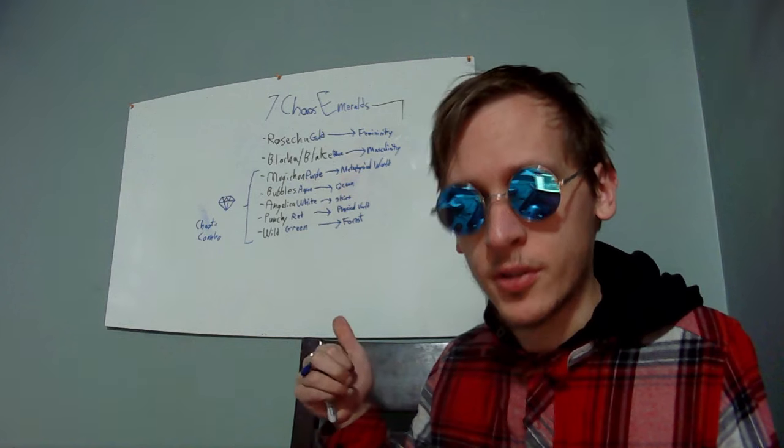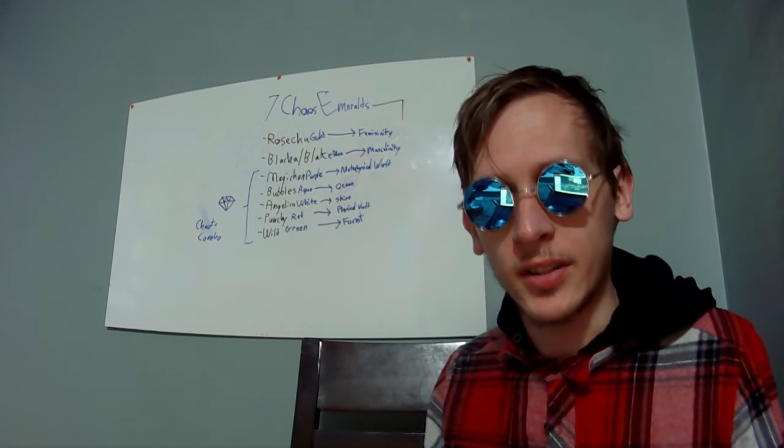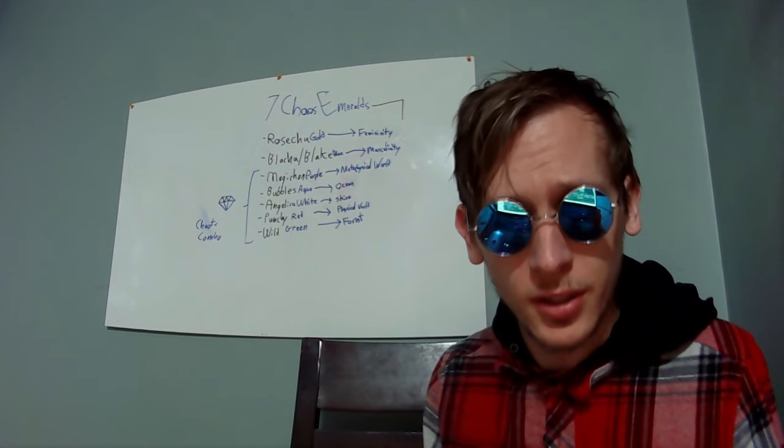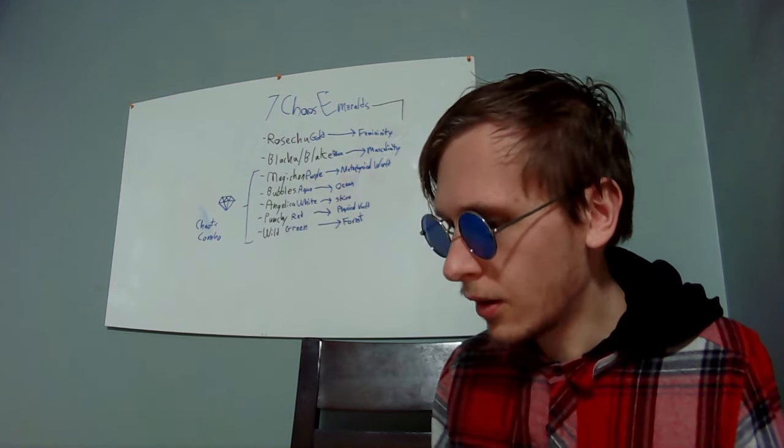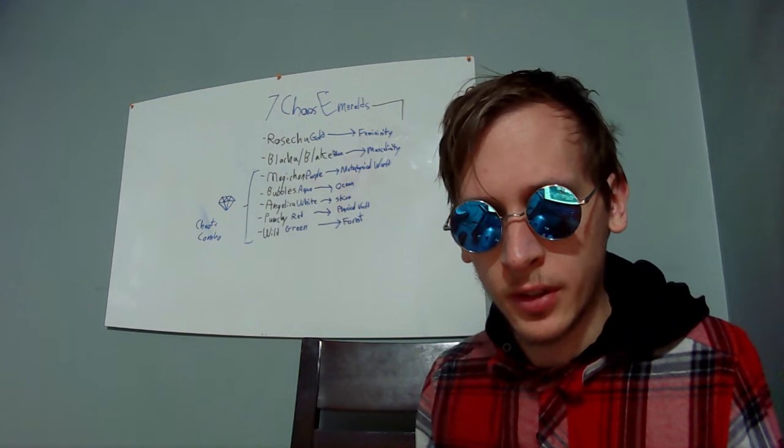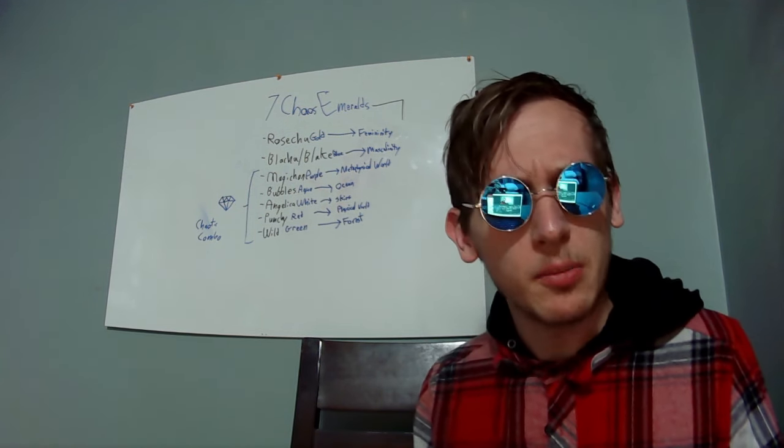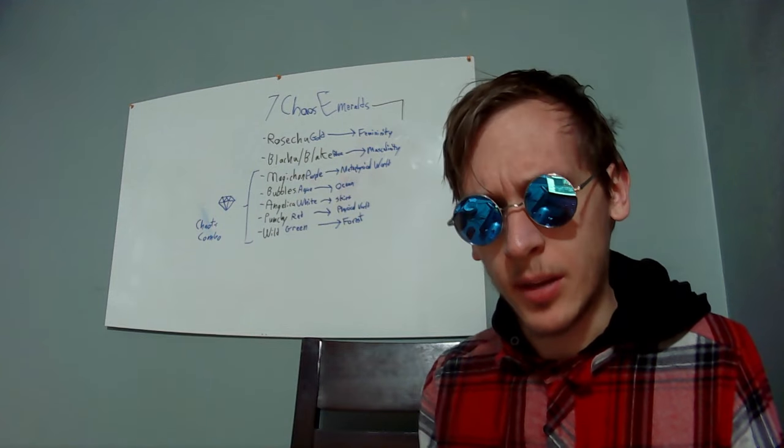I believe that these Sonichus are the powers and personalities of the individual chaos crystals manifesting as hallucinations. Quite literally, they are children of Chris-Chan's mind, and whatever psychic mind the chaos emeralds may have.